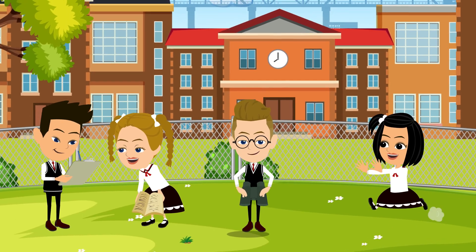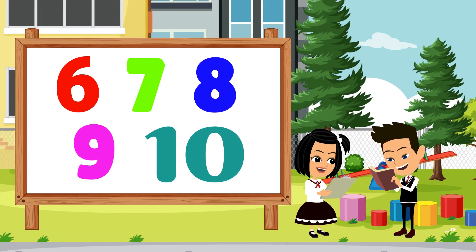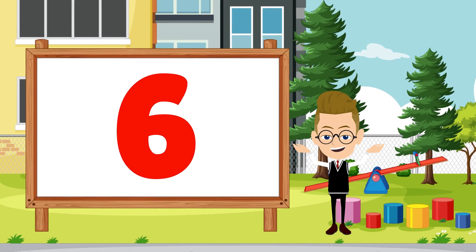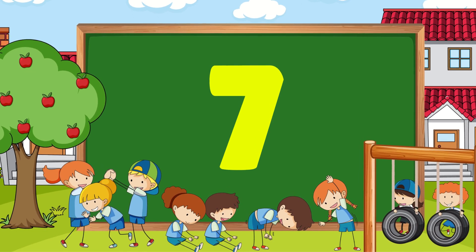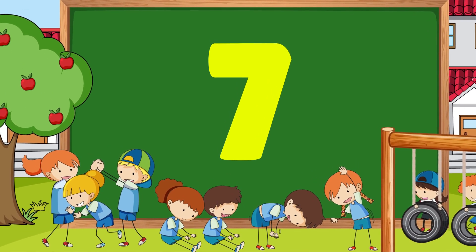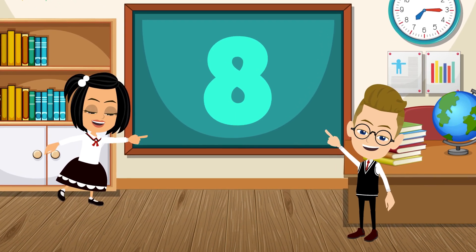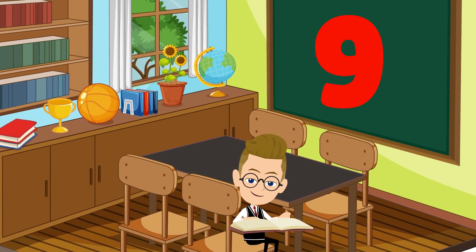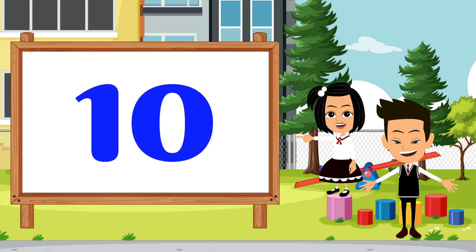Six, seven, eight, nine, ten — let's go through them all again. Five is odd, can't divide in two. Six is even, it splits right through. Seven is odd, a little wild. Eight is even, neat and styled. Nine is odd, just like before. Ten is even, two groups of four and more.